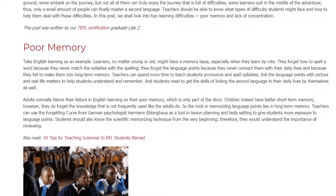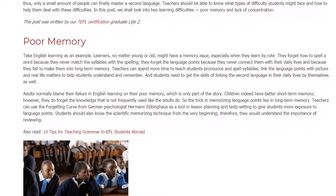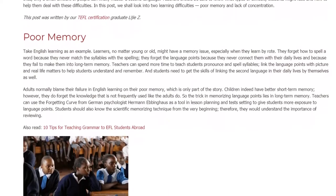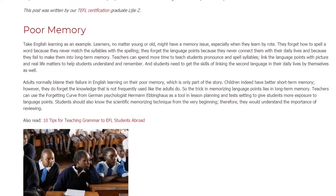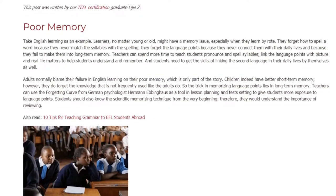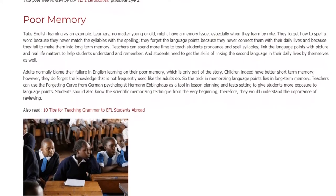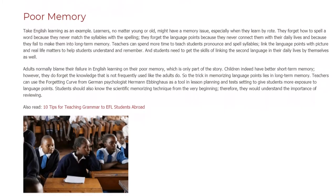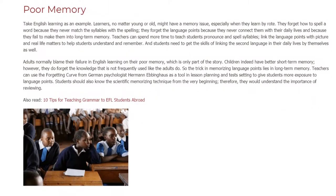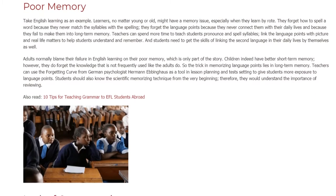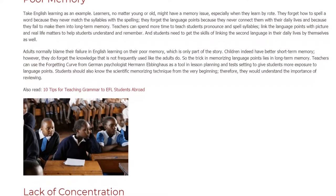Poor Memory. Take English learning as an example. Learners, no matter young or old, might have a memory issue, especially when they learn by rote. They forget how to spell a word because they never match the syllables with the spelling. They forget the language points because they never connect them with their daily lives, and because they fail to make them into long-term memory. Teachers can spend more time teaching students to pronounce and spell syllables, and link language points with pictures and real-life matters to help students understand and remember.